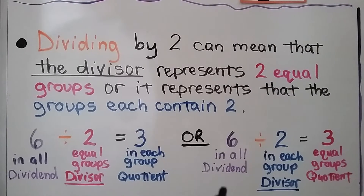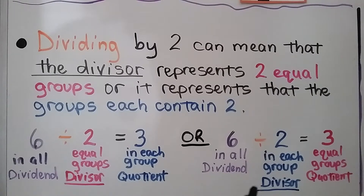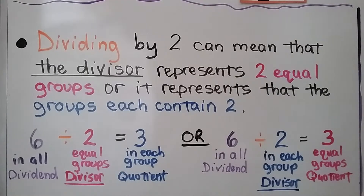Or, it could be 6 in all — that's our dividend — and we have 2 in each group as our divisor, and our quotient is how many equal groups we have.